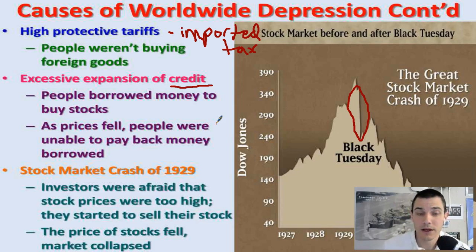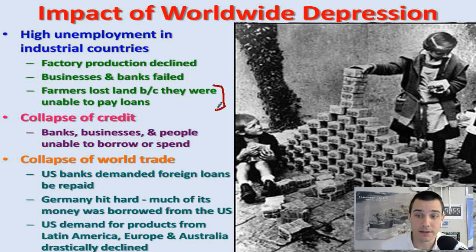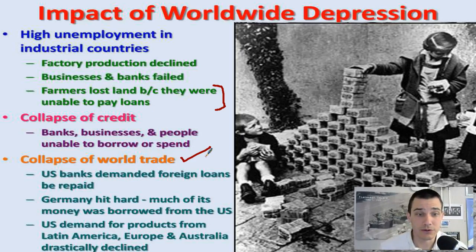When the stock market crashes, obviously businesses crash. People's personal investments are wiped out completely. This leads to high unemployment — companies have to cut people, lay people off. Factory production declines, businesses and banks fail, farmers lose their capacity to make a living because they're unable to pay loans, they're overproducing goods, and no one's buying from them. The credit system collapses, banks and businesses are unable to borrow or spend. World trade gets hit very hard, tariffs are increasing but people aren't trading as much, and Germany is hit particularly hard.